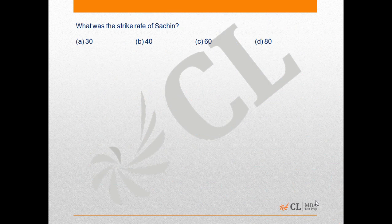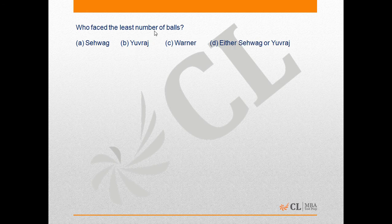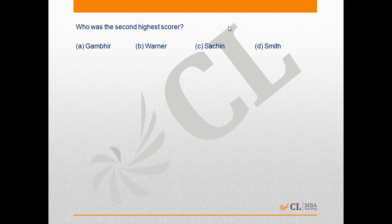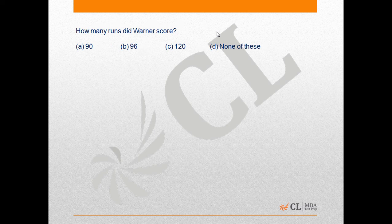Moving to the questions: Question 1 asks what was Sachin's strike rate — it was 40, so option B is correct. Question 2 asks who faced the least number of balls — the minimum of 120 balls was faced by either Yuvraj or Sehwag, so option D is correct. Question 3 asks who was the second highest scorer — it was Sachin, so option C is correct. Question 4 asks how many runs Warner scored — Warner scored 90 runs, so option A is correct.